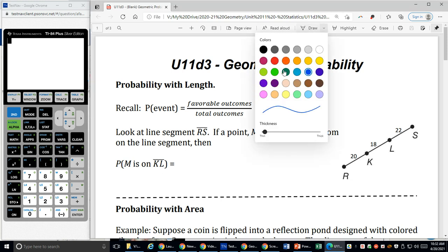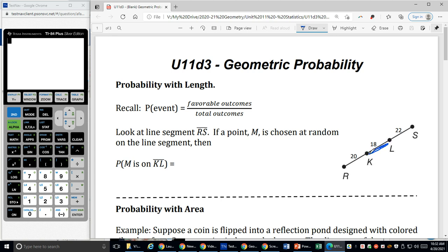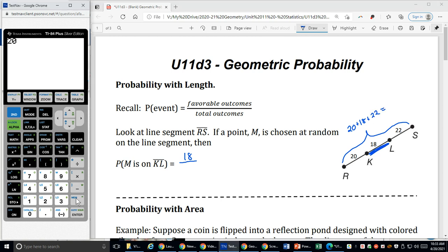So I want point M to land on this segment right here. So my favorable distance that I have to land on is 18 units. Out of what is my total probability or my total length that I could land on? It's going to be that 20 units plus that 18 units plus that 22 units. So the total distance I could land on is 20 plus 18 plus 22, which is 60.